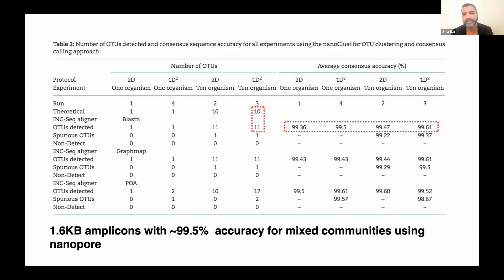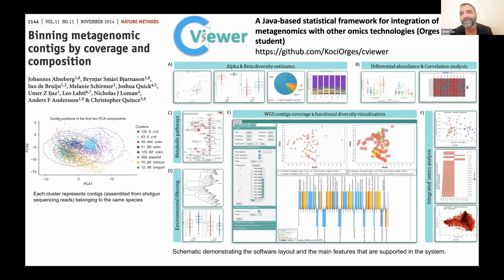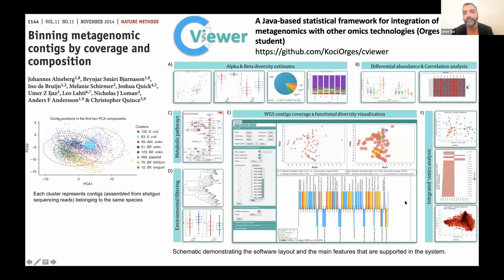You mentioned CONCOCT earlier — I've had the honour of being part of the team that led the development of CONCOCT, which is useful for binning metagenomic contigs based on both tetranucleotide composition and coverages. The recent development is that we have taken CONCOCT forward and one of my PhD students has developed an easy-to-use interface that integrates with CONCOCT, allowing you to perform all kinds of statistical analysis — whether diversity estimates, differential abundance, adding another modality like metabolomics, or getting all functional pathways out.